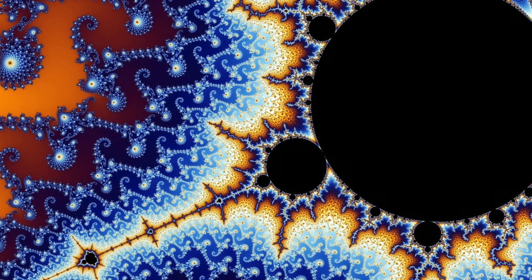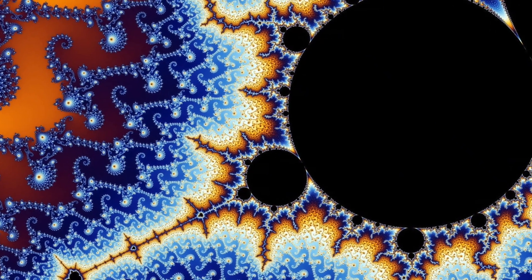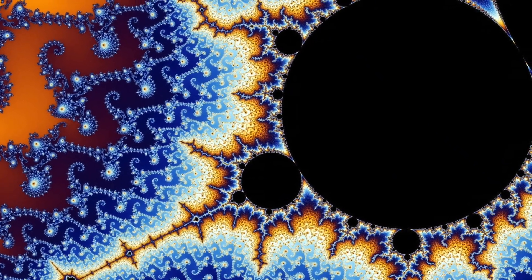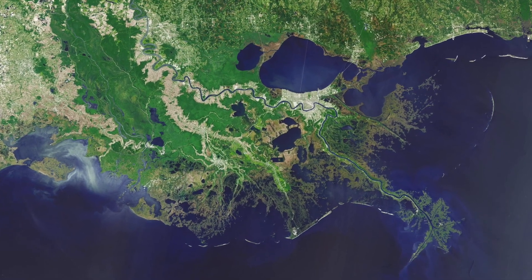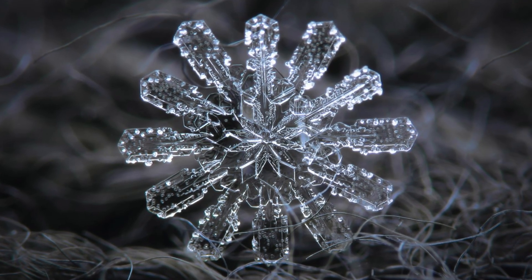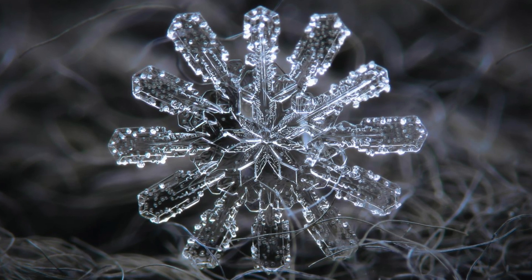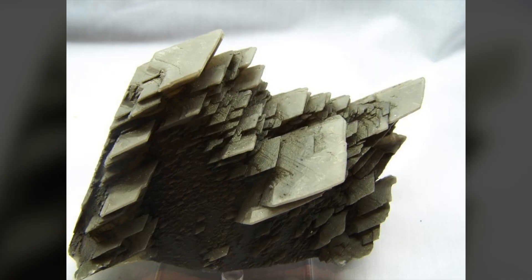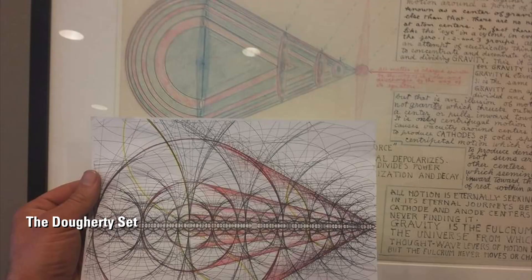A fractal is a curve or geometric figure each part of which has the same statistical character as the whole. Fractals are useful in modeling structures such as eroded coastlines or snowflakes in which similar patterns recur at progressively smaller scales.